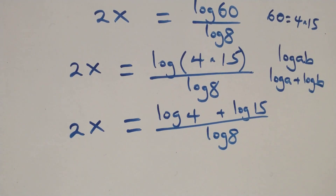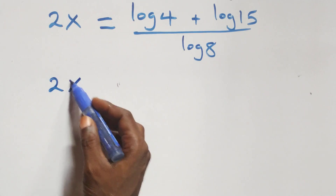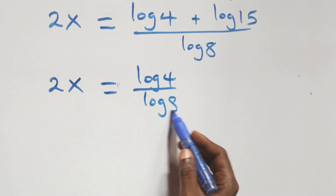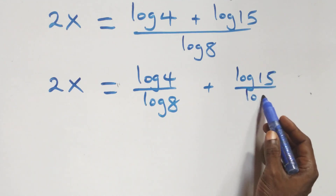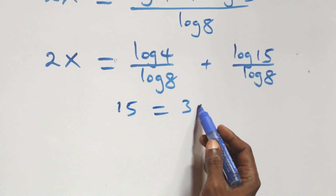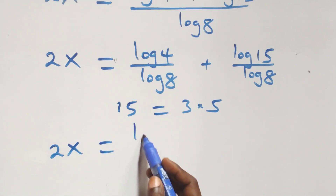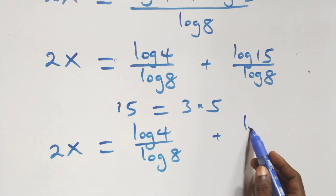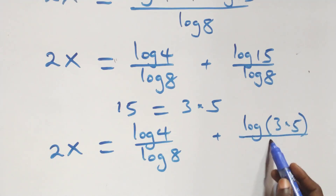Then we have 2x equals to log 4 over log 8. Then also here, we can express 15 as 3 times 5. At this, what we have here becomes 2x equals to log 4 over log 8 plus log(3 times 5) over log 8.